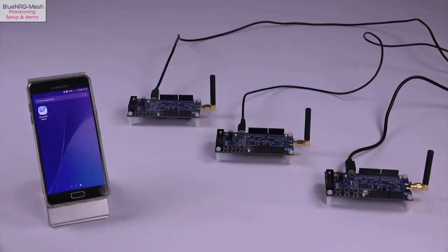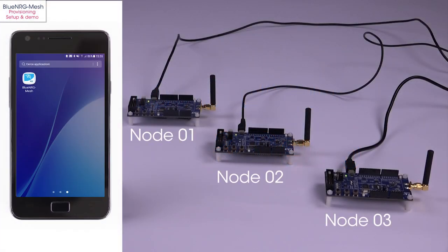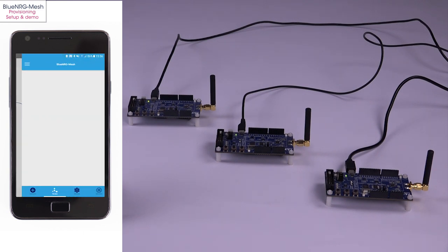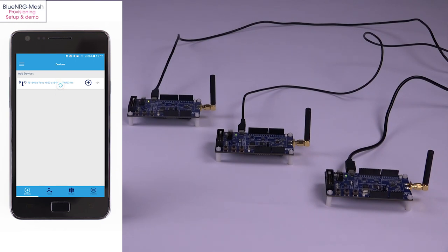Now turn on the Bluetooth of your smartphone. Open the Blue Energy Mesh app on your smartphone. At first it will display the default nodes view, which lists all provisioned nodes. Click the Devices tab to view the unprovisioned devices and refresh it by swiping down. Here, three devices are found.